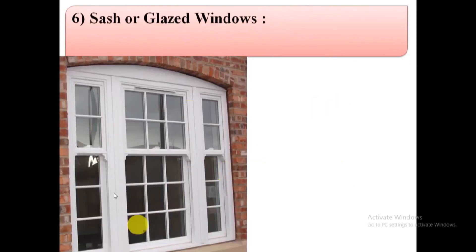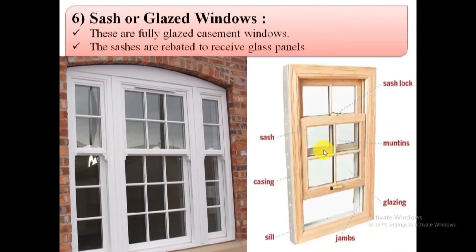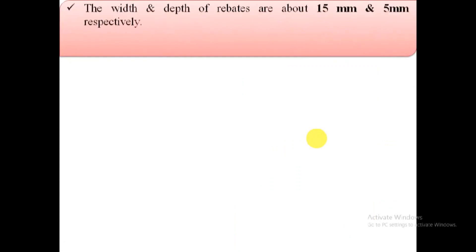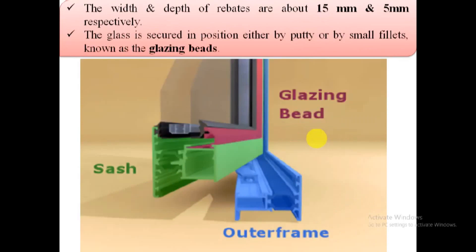6. Sash windows or glazed windows. These are windows having panels which are fully glazed. The frame of each shutter consists of two vertical styles, top rail, and bottom rail. The space between the top and bottom rail is divided into small panels by means of small steel or timber members placed vertically or horizontally. These members are called sash bars or glazing bars. Glass panels are fixed to these sash bars by means of putty or timber beads, commonly known as glazing beads. If the window opening is wide, the window frame may have a central vertical member known as a mullion.